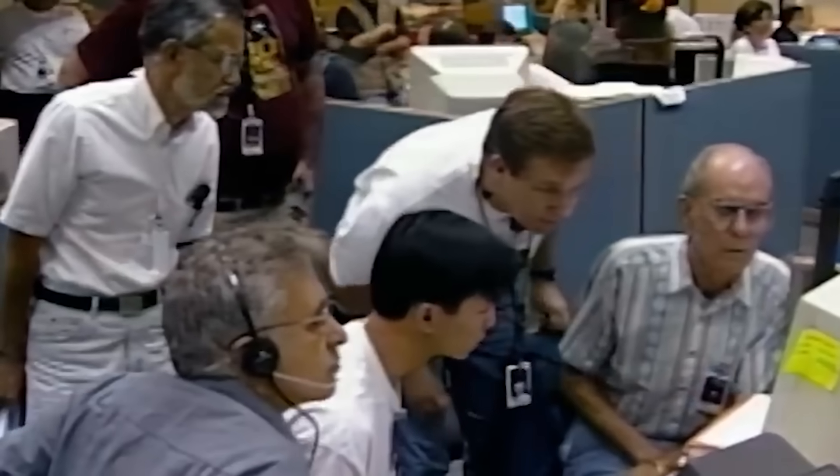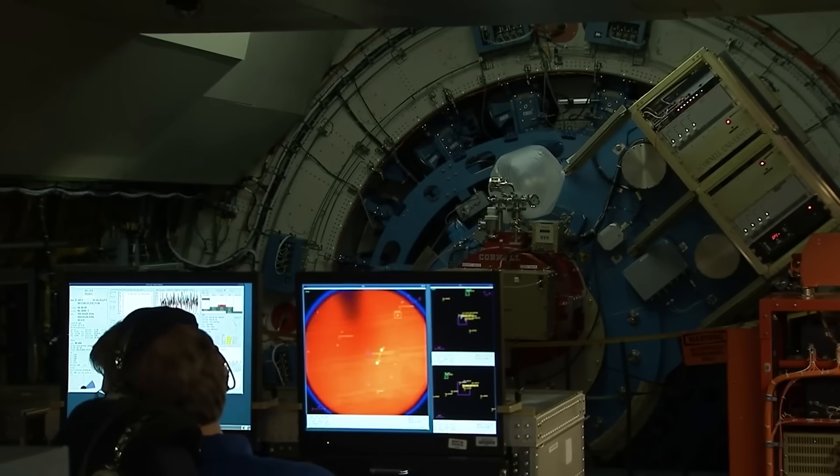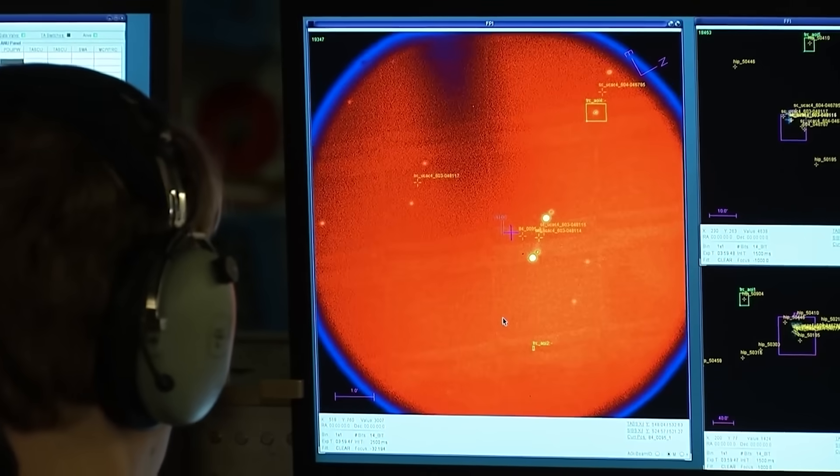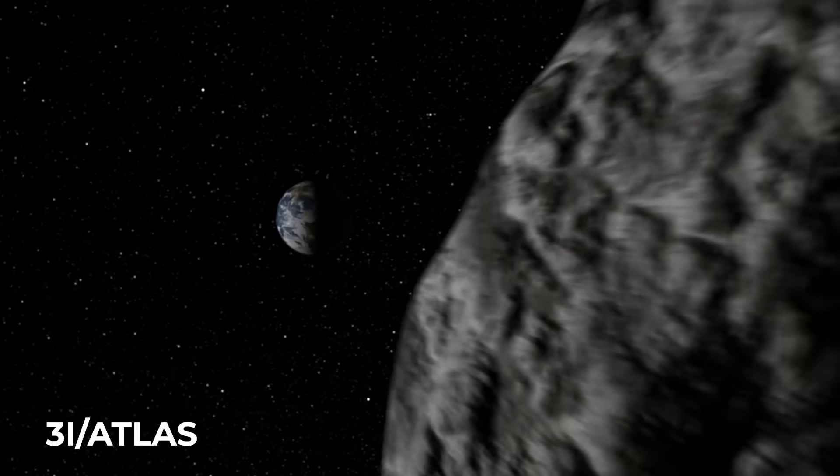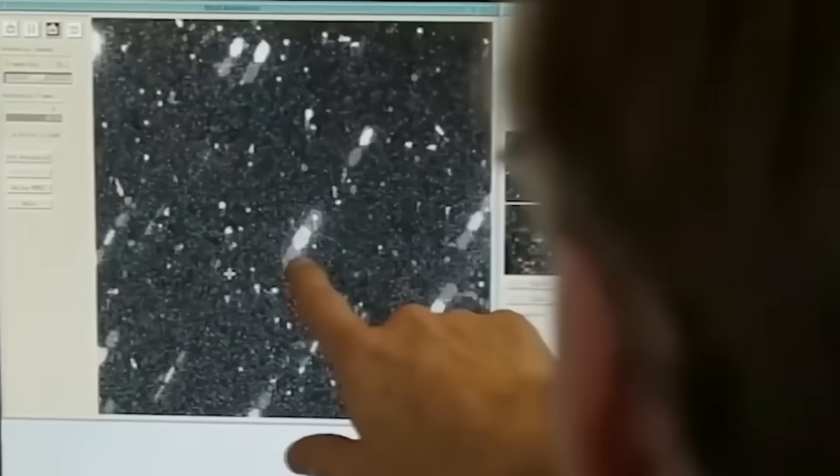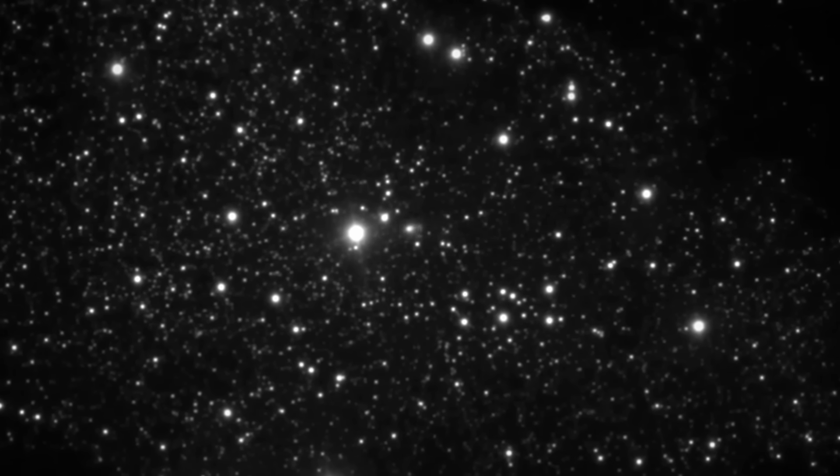Not only are there new images and data, but also the discovery of a mysterious object without a tail traveling between 3i/Atlas and Earth. Where did it come from? All this has led some scientists to suggest that humanity could be in danger.